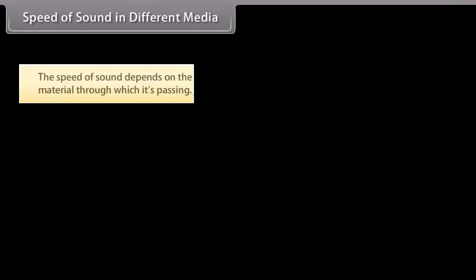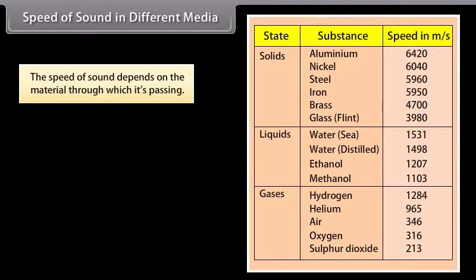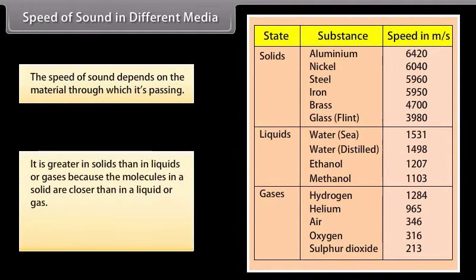Speed of sound in different media. The speed of sound depends on the material through which it is passing. It is greater in solids than in liquids or gases because the molecules in a solid are closer than in a liquid or gas. In this table you can find the speed of sound in different media at 25 degrees Celsius.